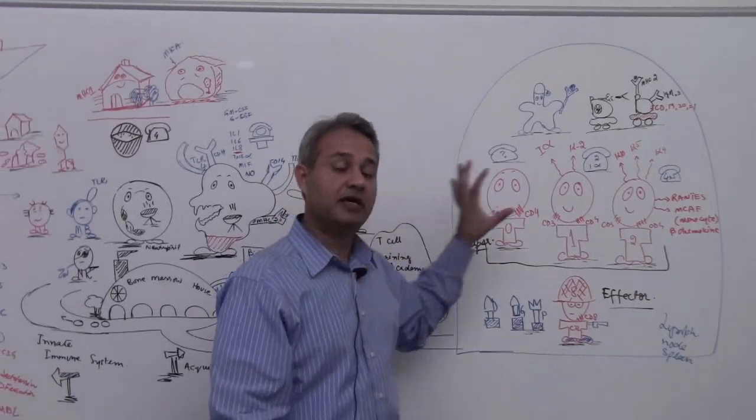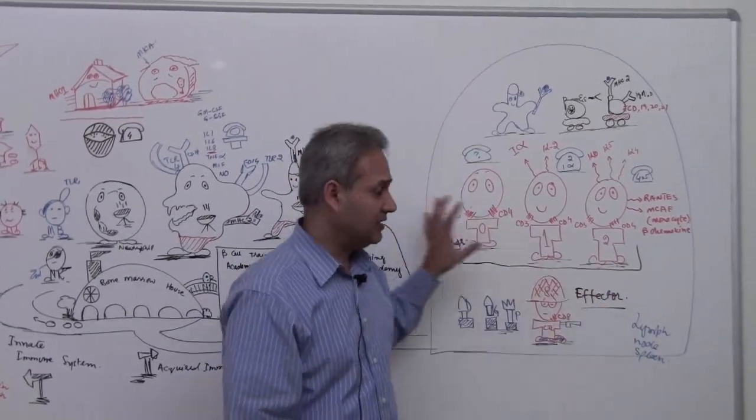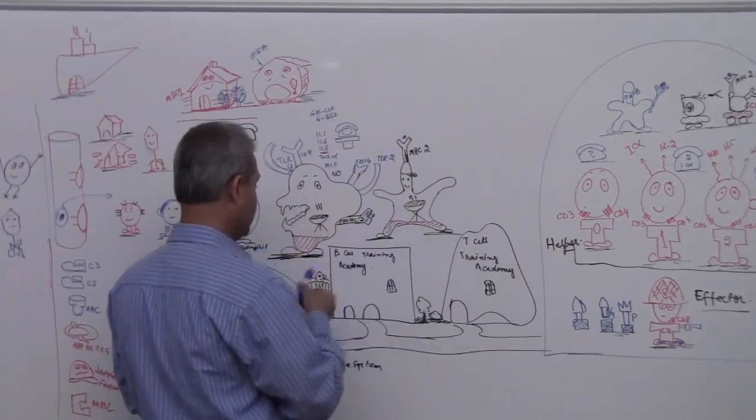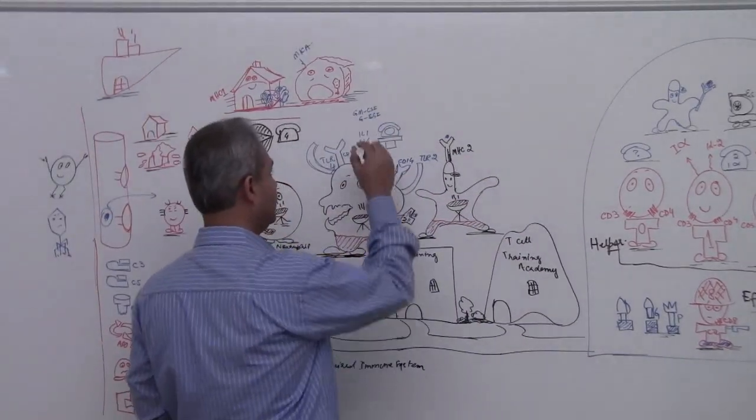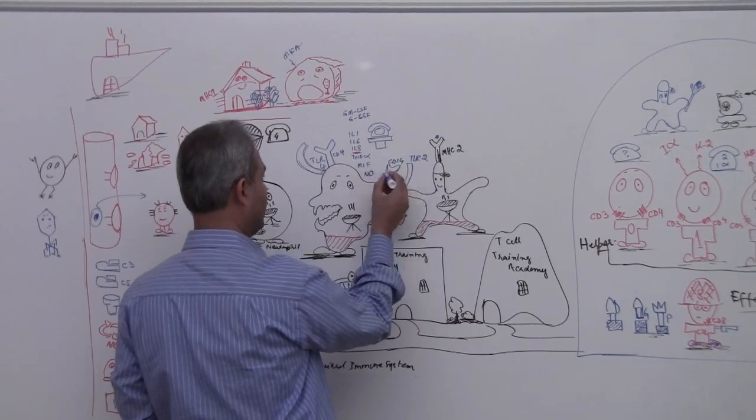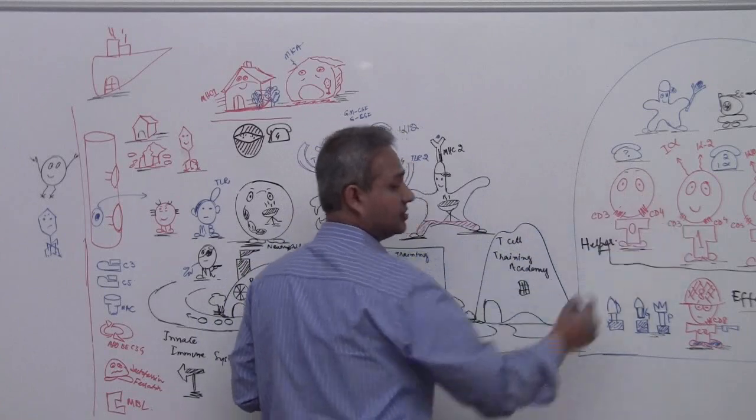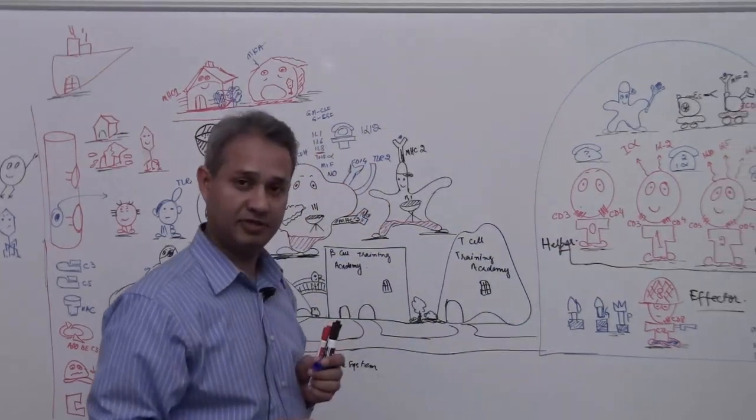So the innate system activates the acquired system. The additional thing is, please remember, it is IL-12 which is generated by the macrophage. How did I forget IL-12? So IL-12 is generated by macrophages which causes the effect on the helper cell.